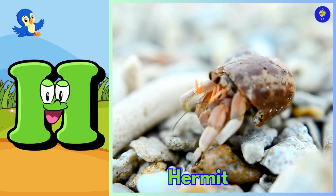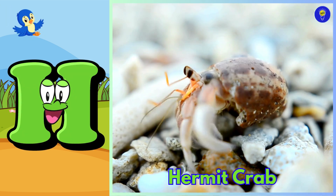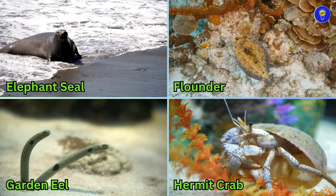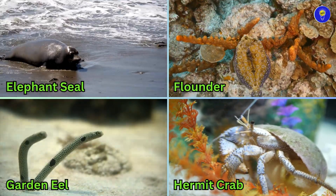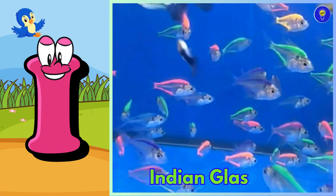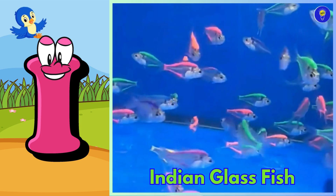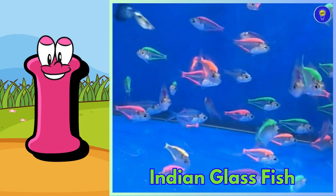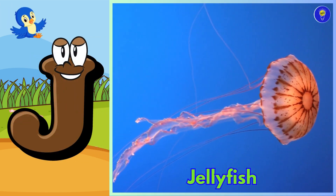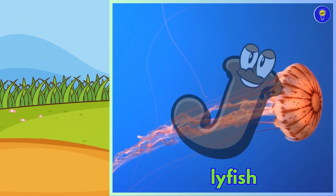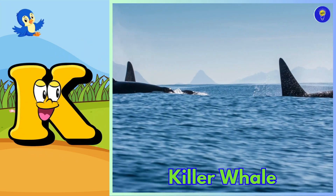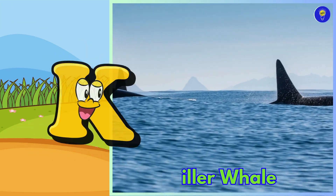H is for hermit crab, ha, hermit crab. I is for Indian glass fish, eh, Indian glass fish. K is for killer whale, kuh, killer whale.